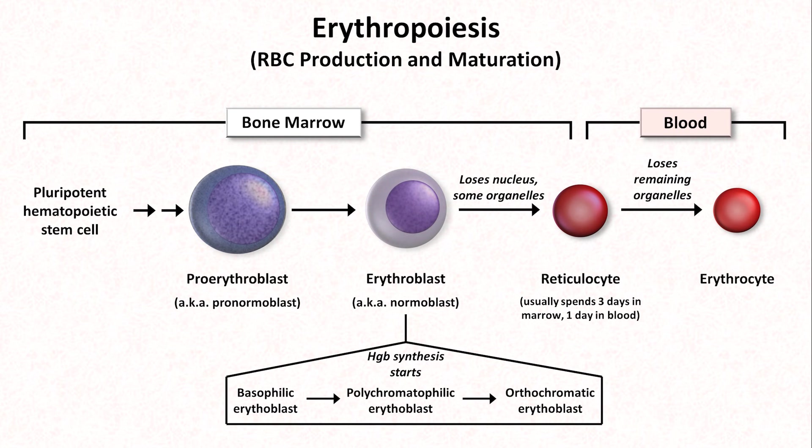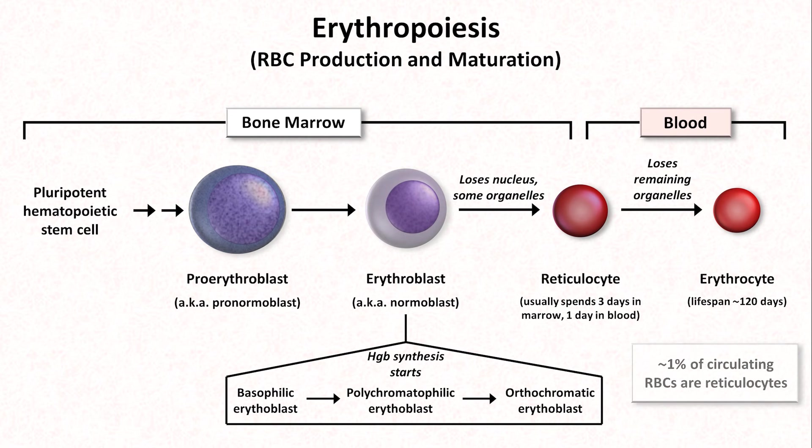The normal lifespan of an erythrocyte is about 120 days. Therefore, in healthy adults, about 1% of circulating RBCs are retics.